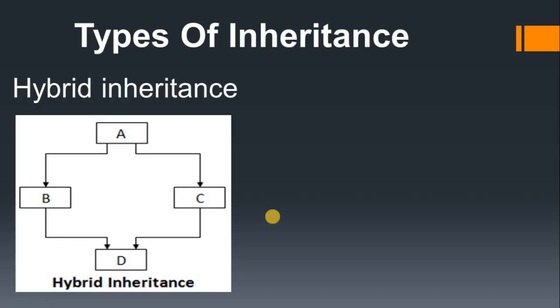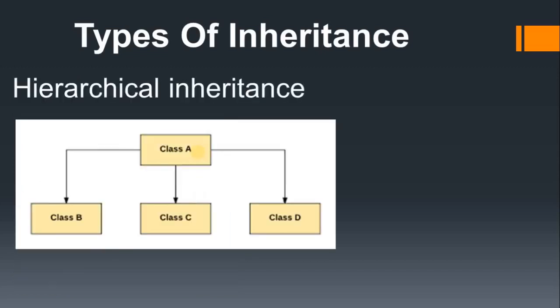In this tutorial we cover hybrid and hierarchical inheritance, as a continuation of the last tutorial. Hybrid inheritance means we combine more than one type of inheritance in the same program.